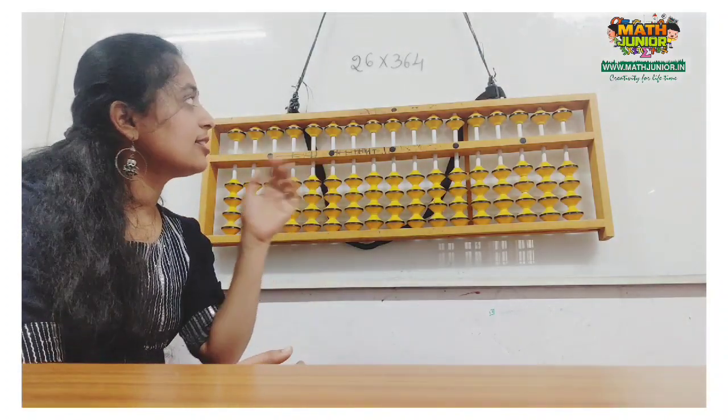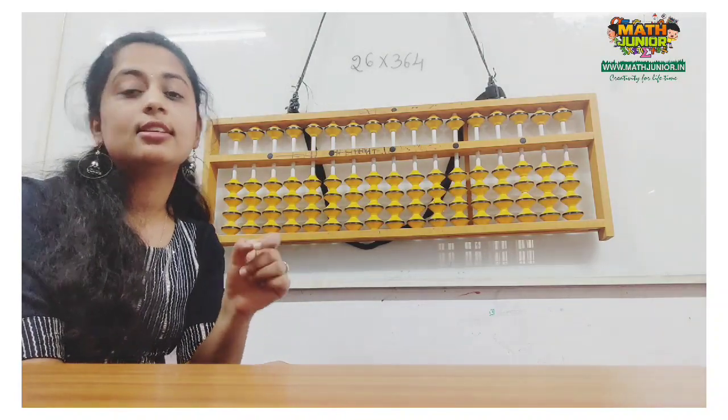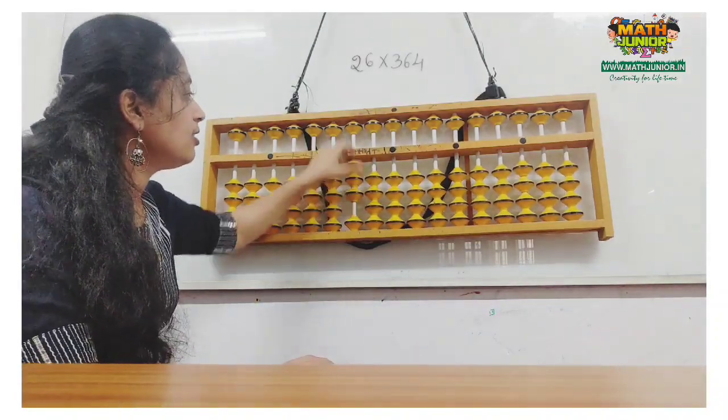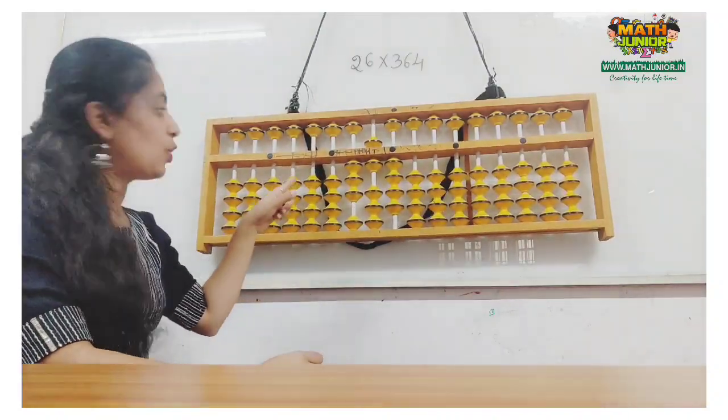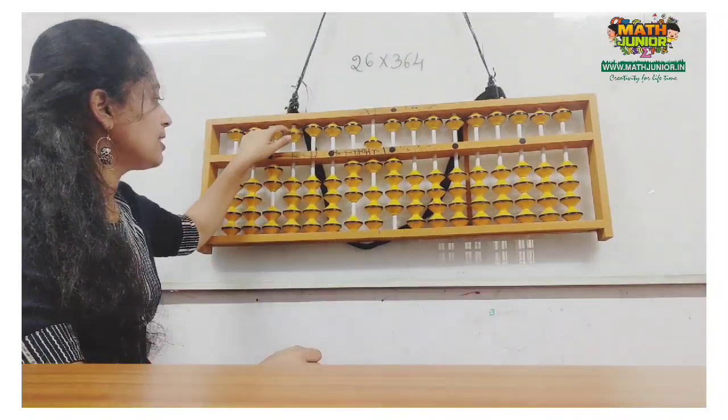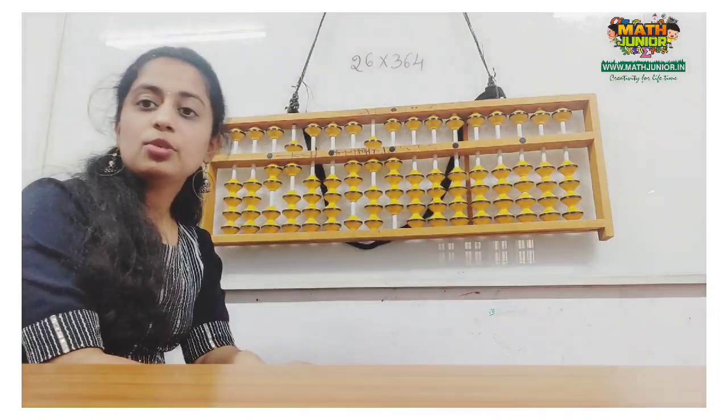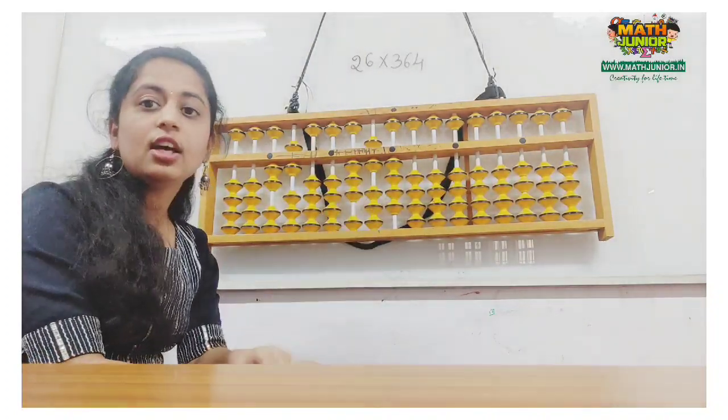First we are going to place 364 using unit, 10, and 100. 364, and skip two rows and place 26. For multiplication problems, we have to start with the unit rod.